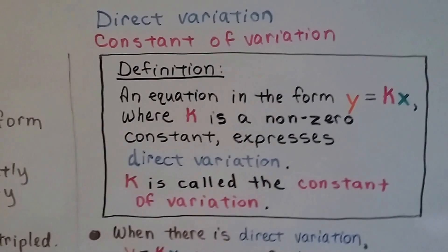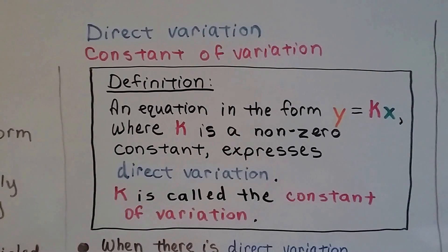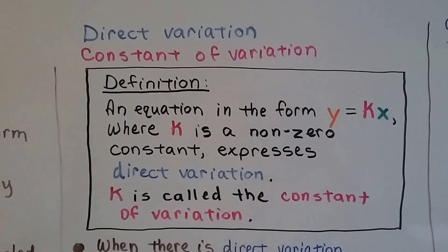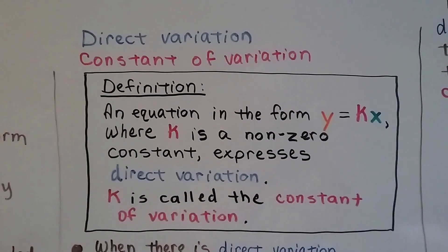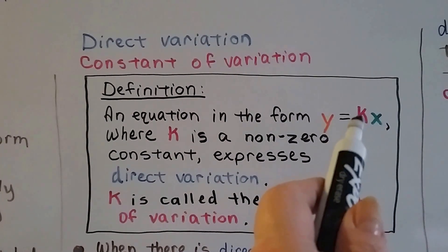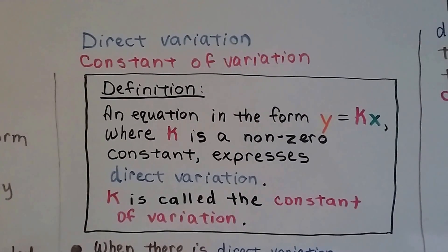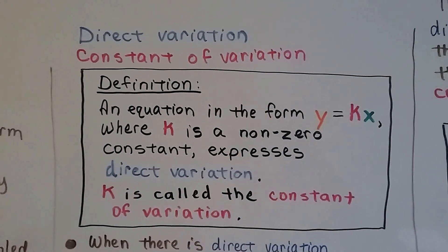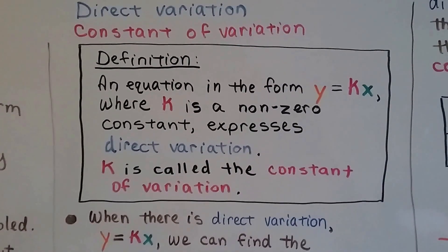Our definition for direct variation and constant of variation: an equation in the form of y equals kx is the direct variation, where k is a non-zero constant. So k can't be zero, but it's a constant number that doesn't change. It expresses a direct variation, and the k is the constant of variation.